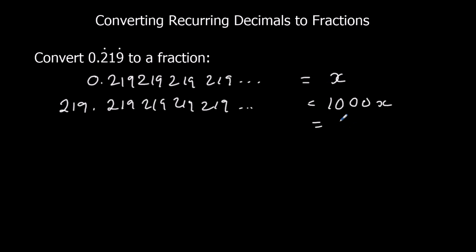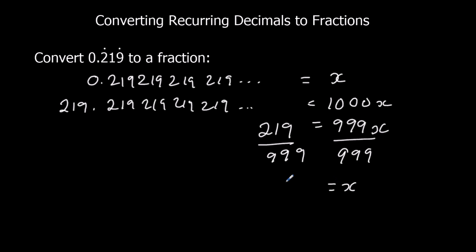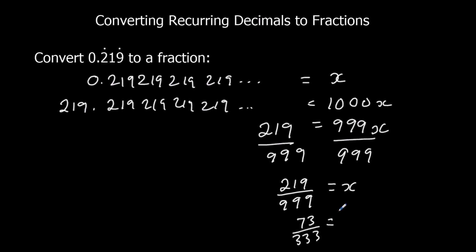Same thing again: a thousand take away one is nine hundred and ninety-nine. And 219.219... take away 0.219... is just 219. Divide both sides by 999, giving x equals 219 over 999. That will simplify — 219 is in the three times table, and 999 is in the three times table — so that goes to 73 over 333. That won't simplify any further, so 0.219 recurring equals 73 over 333.